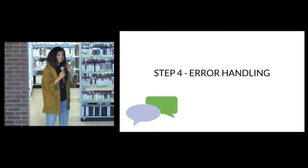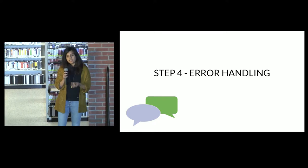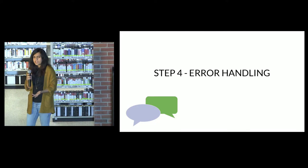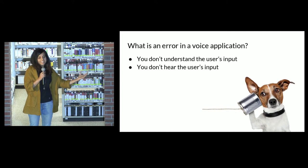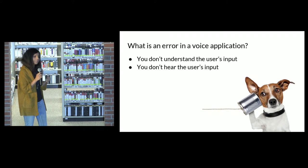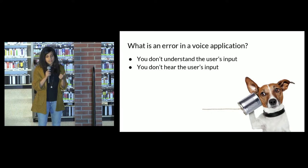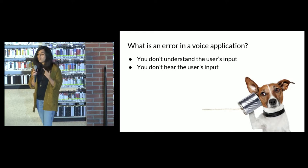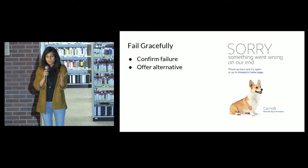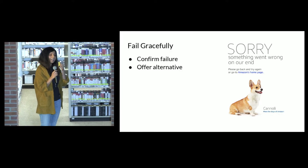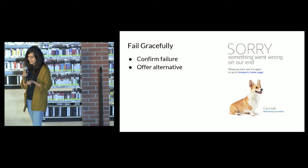Which brings me to step number four: error handling. 80% of designing for voice is designing for edge cases or errors. Errors are when you say something to Alexa and Alexa does not understand what you're saying. As a conversation designer, you need to first accept that there was a failure — say 'I'm sorry, I cannot understand you right now.' And secondly, offer an alternative: 'I'm sorry, I cannot do this right now, but here's something else I can do. Will that help you?' Doing these two things together is called graceful failure, and failing gracefully is the key to an excellent voice user interface.